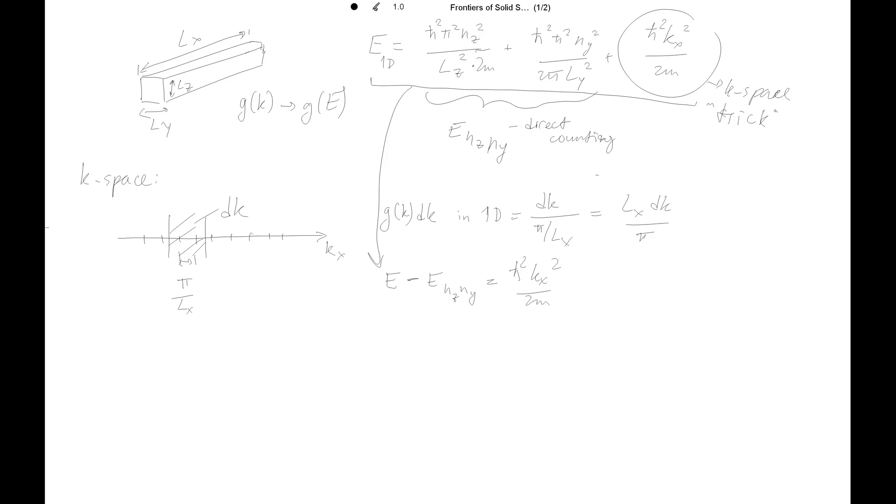Then we express kx. So kx is now square root of (E - Eny,nz)·2m divided by ℏ². The dkx, so the derivative. We can drop these x-indices. We have only one direction which is macroscopic.